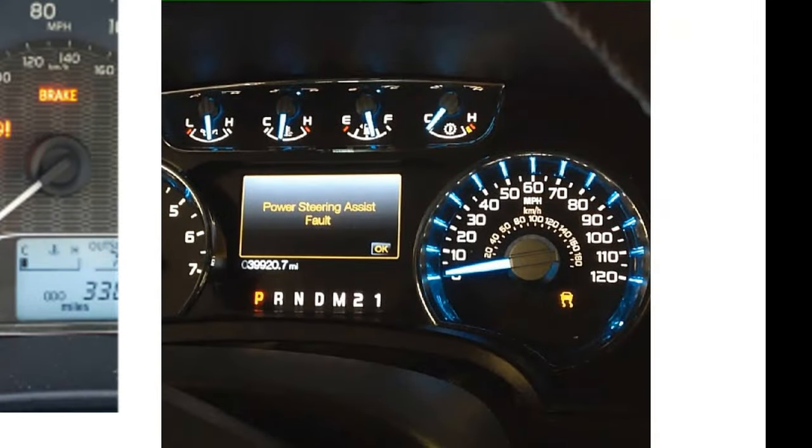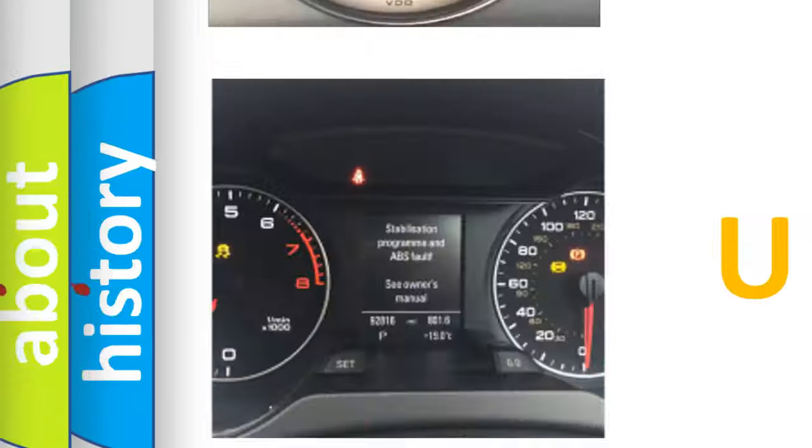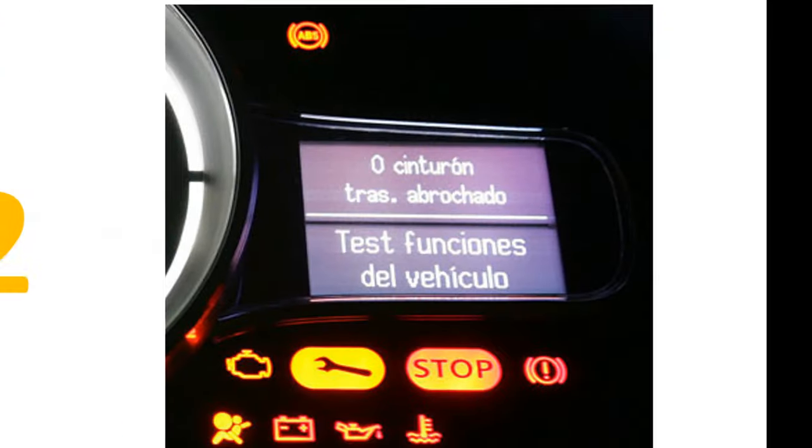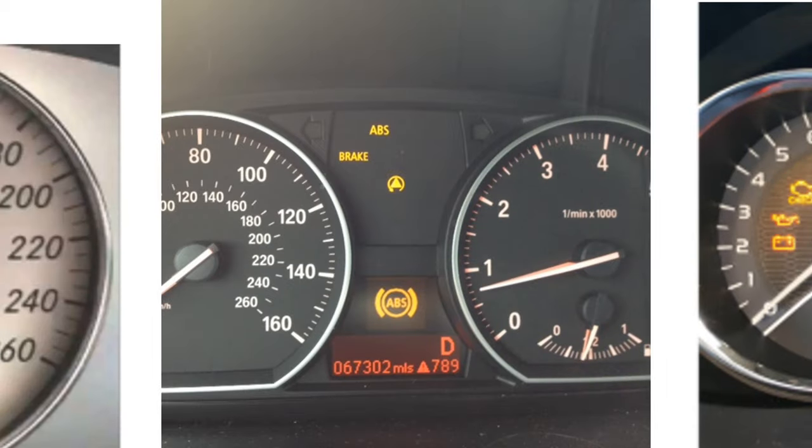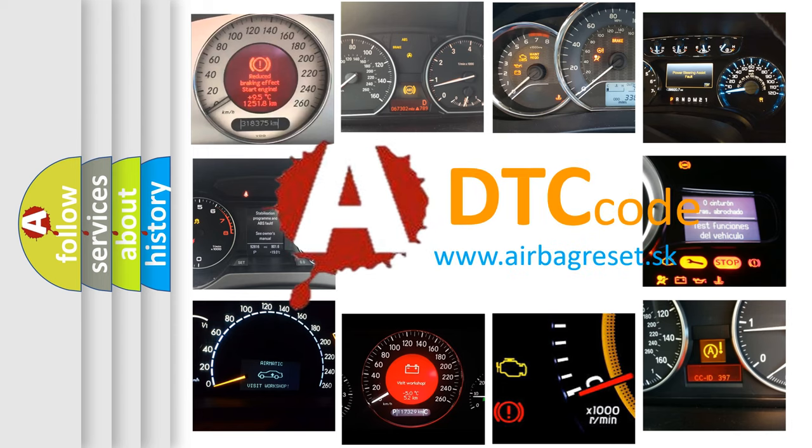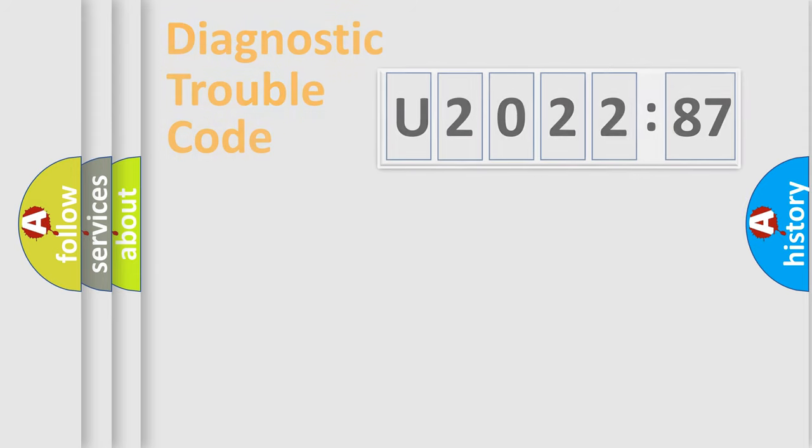Welcome to this video. Are you interested in why your vehicle diagnosis displays U202287? How is the error code interpreted by the vehicle? What does U202287 mean, or how to correct this fault? Today we will find answers to these questions together. Let's do this.